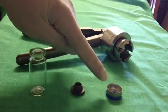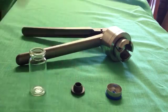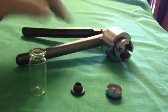What we have here is the actual cap, the rubber stop, the vial, and the crimper.